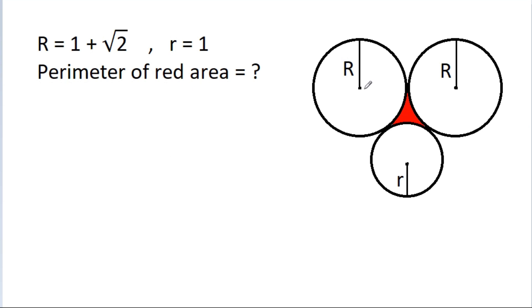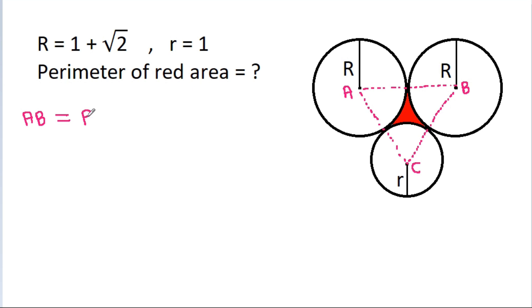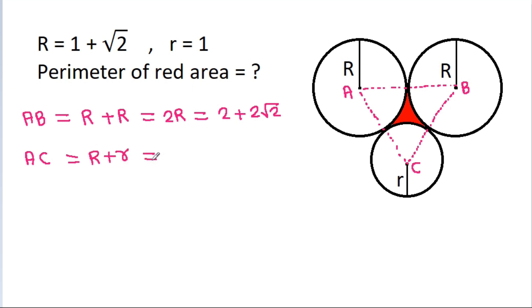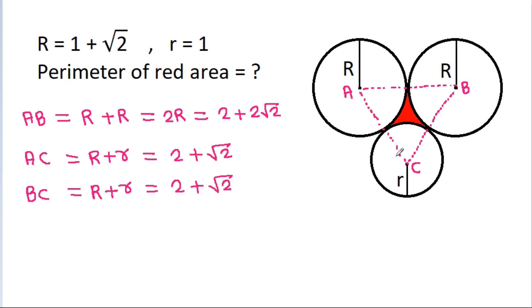If we join these two points and these two points and these two points, suppose this is A, this is B, and this is C. Then AB will be equal to R plus R, that will be 2R, which is 2 plus 2 root 2. And AC will be equal to R plus small r, that will be 2 plus root 2. And BC will be equal to R plus small r, that is also 2 plus root 2. That means AC is equal to BC.